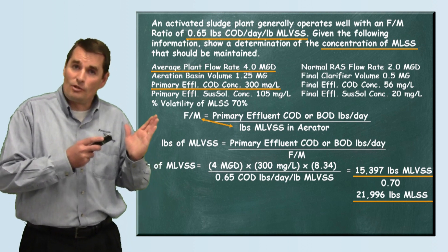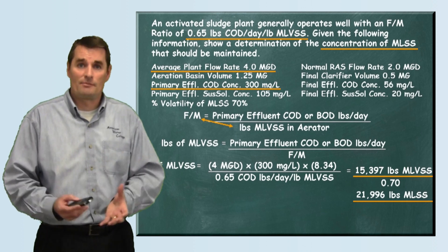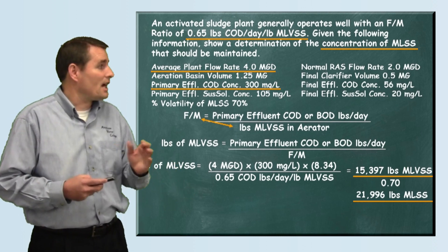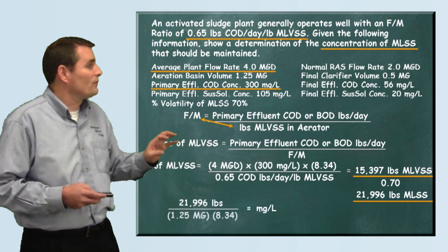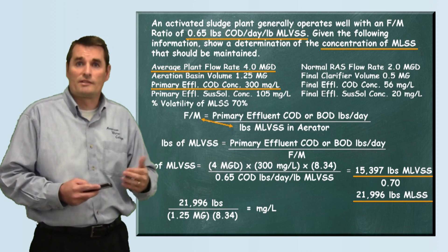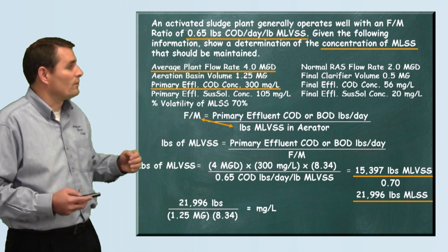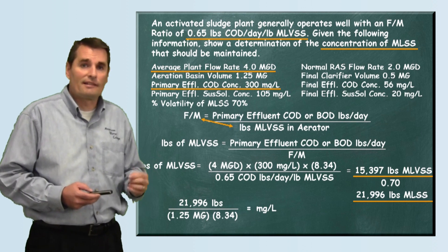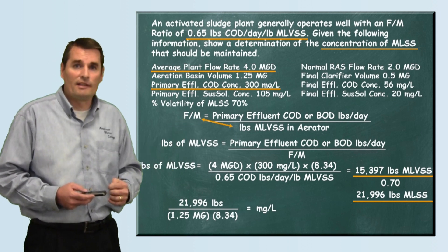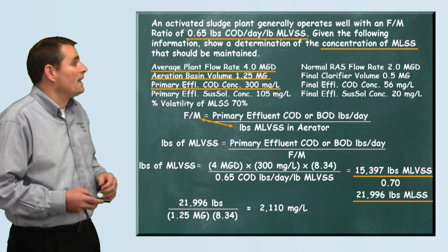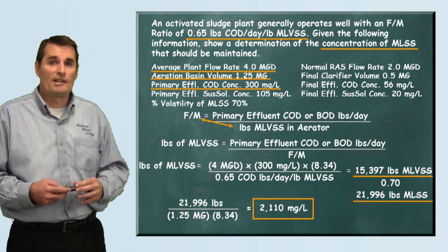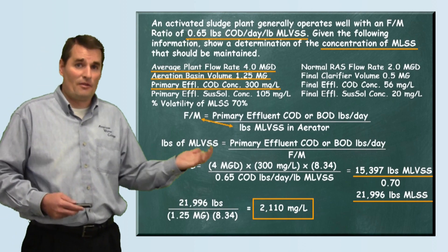Now we have the total pounds of mixed liquor suspended solids in the aeration basin. We need to use the aeration basin volume with these pounds to calculate the concentration. Rearranging the pounds formula to solve for milligrams per liter, we take 21,996 pounds, divide by the aeration basin volume of 1.25 million gallons, and divide by 8.34. We find that we need 2,110 milligrams per liter in the aeration basin. And that is how this problem is solved.